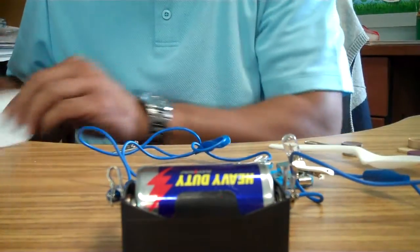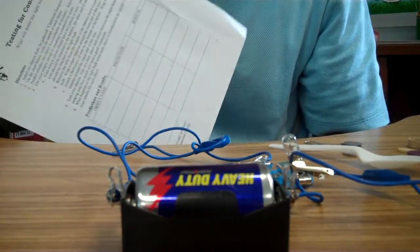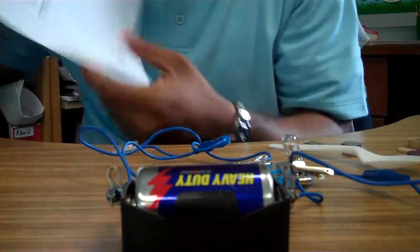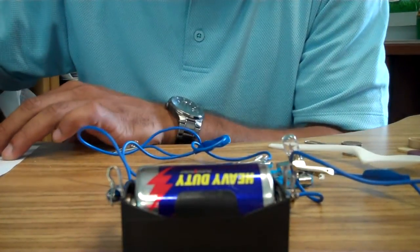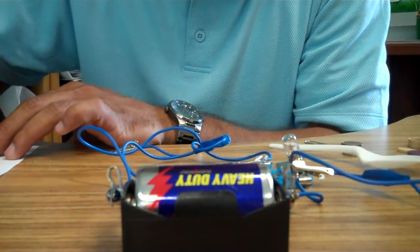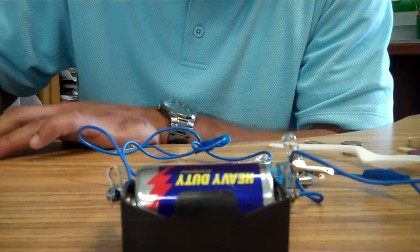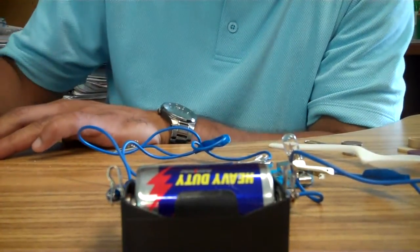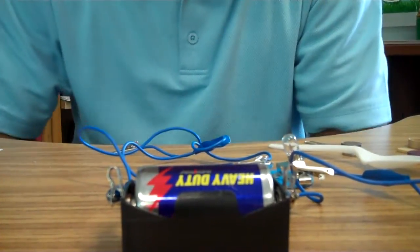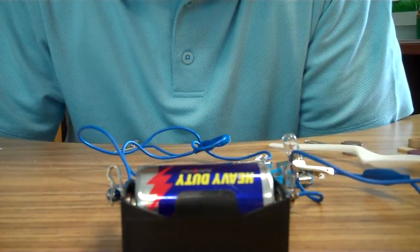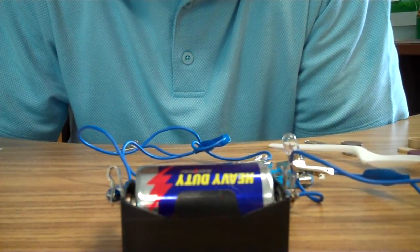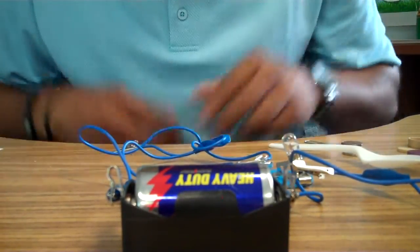We also have a worksheet where we are going to predict before we even do this activity. For example, it says the object name, so I am going to write the object name as the spoon. My prediction is the bulb will not light up because it will not conduct electricity. But let me see, let me try.